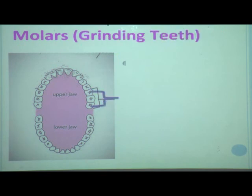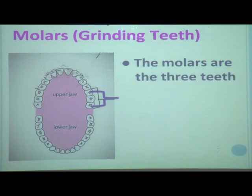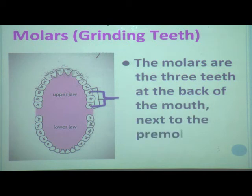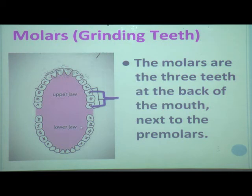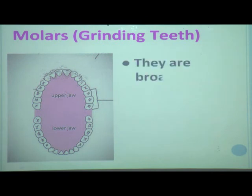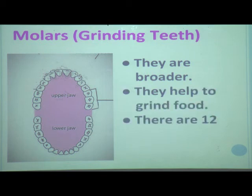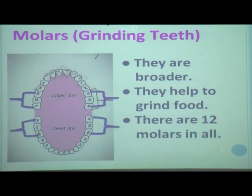Now we will see molars. The molars are the three teeth at the back of the mouth, next to the premolars. They are broader and help to grind food, which is why they are called grinding teeth. There are 12 molars in all — 6 in the upper jaw and 6 in the lower jaw.